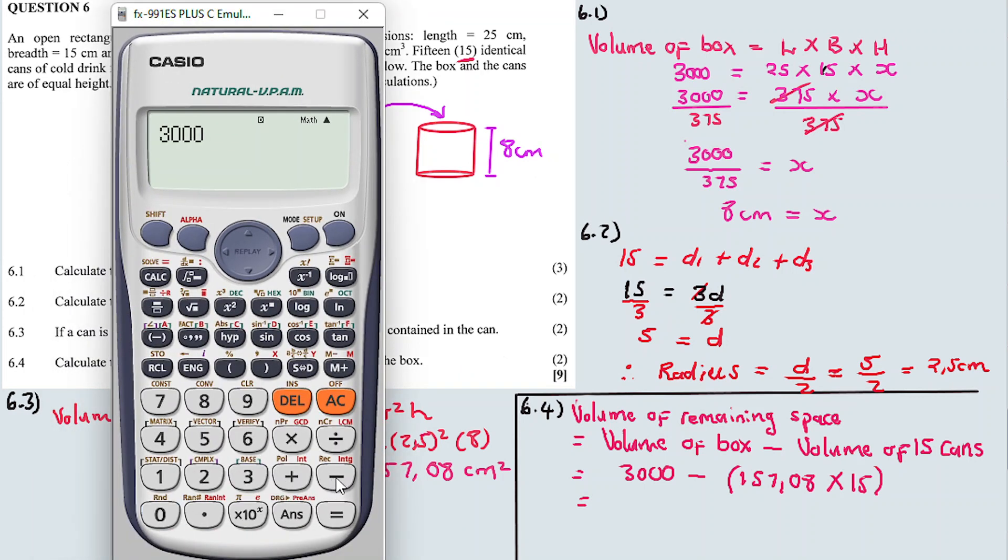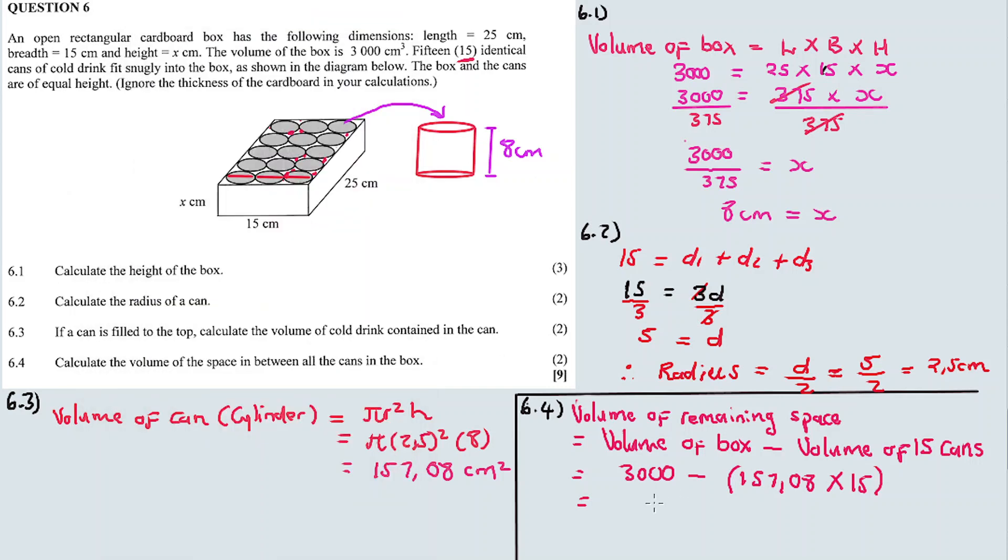3000 minus 157.08 times 15 equals 643.8 centimeters cubed. Not squared, but cubed. Volume is cubic, and area is centimeter squared. Sorry, it's cubic centimeters, not square centimeters. That's our final answer for question 6. I hope you enjoyed it.